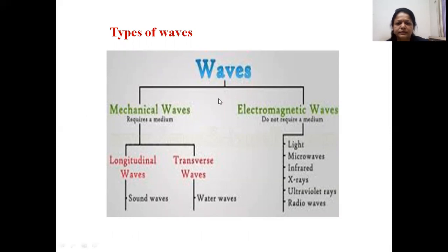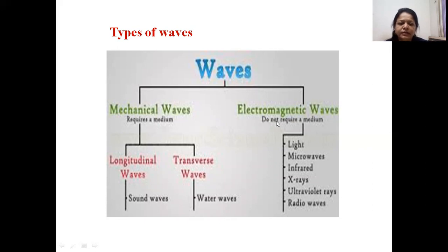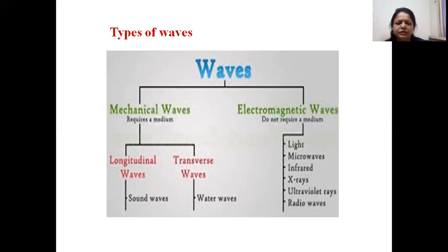On the basis of the requirement of a medium, waves can be divided into two types: mechanical waves and electromagnetic waves. Mechanical waves require a medium to propagate. Electromagnetic waves, also called non-mechanical waves, can travel through a medium but do not necessarily require one.